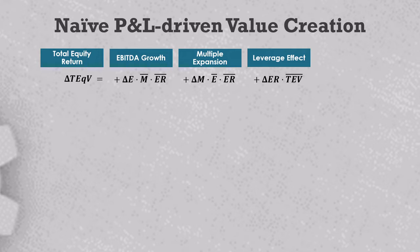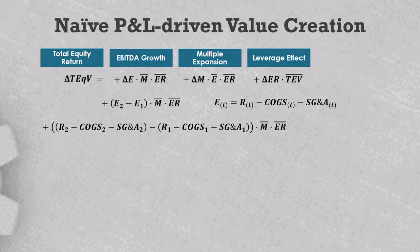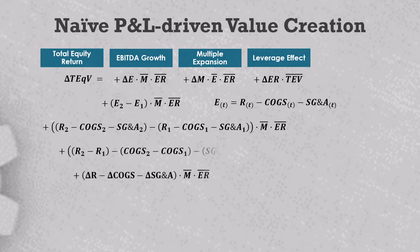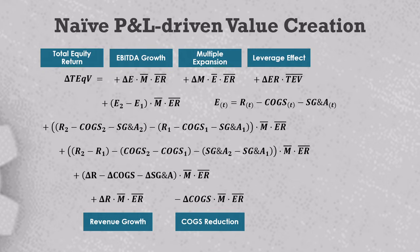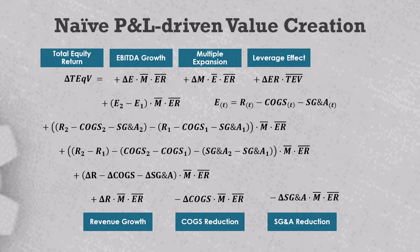One way to try to work the P&L numbers into this model would be to realize that at any time T, EBITDA can be defined as revenue minus COGS minus SG&A. We can substitute this into the model where E2 equals R2 minus COGS2 minus SG&A2, and E1 equals R1 minus COGS1 minus SG&A1. When you follow through with all the math, you find that the delta E term equals the revenue change minus the COGS change minus the SG&A change. This gives a naive model where EBITDA growth is broken into a revenue growth value driver, a COGS reduction value driver, and an SG&A reduction value driver. These three value drivers will always add up to EBITDA growth, so they will bridge the gap, but we'll see that this does not tell us very much.